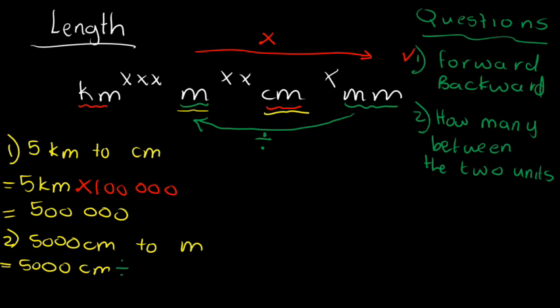Divide by what? How many stars between the two units? Between centimeters and meters, there's two stars. That means it's one and two zeros. Therefore, the answer I will get is 50 meters.